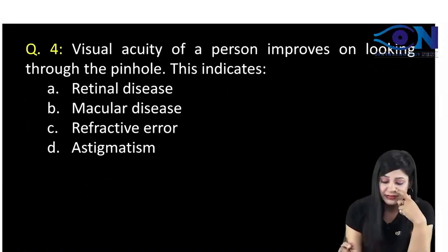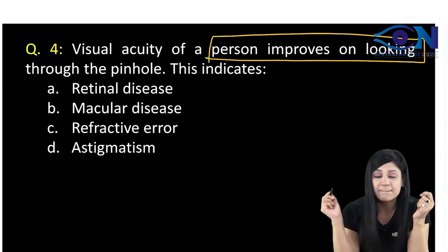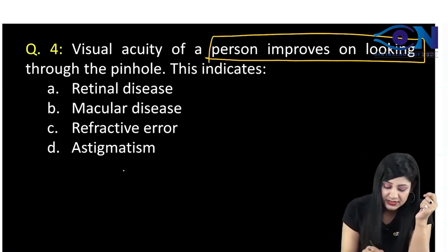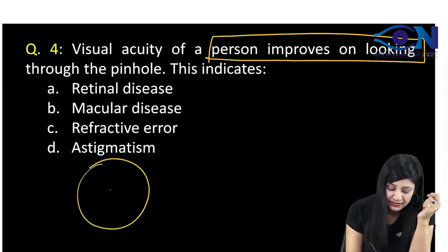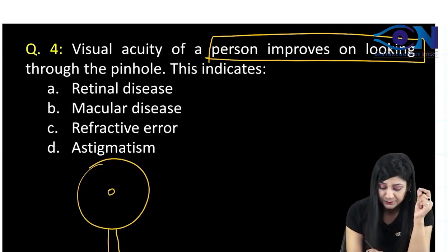Next question, the visual acuity of a person is improving. It's improving on looking through the pinhole. So, pinhole is an instrument, something like this where you can have a small area here and we have a handle here.